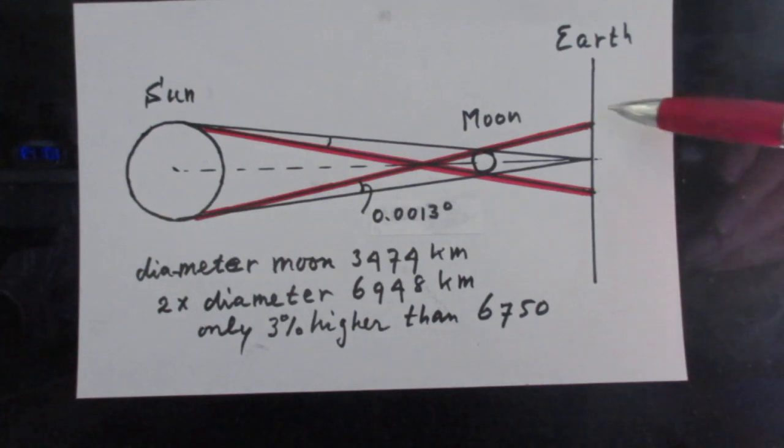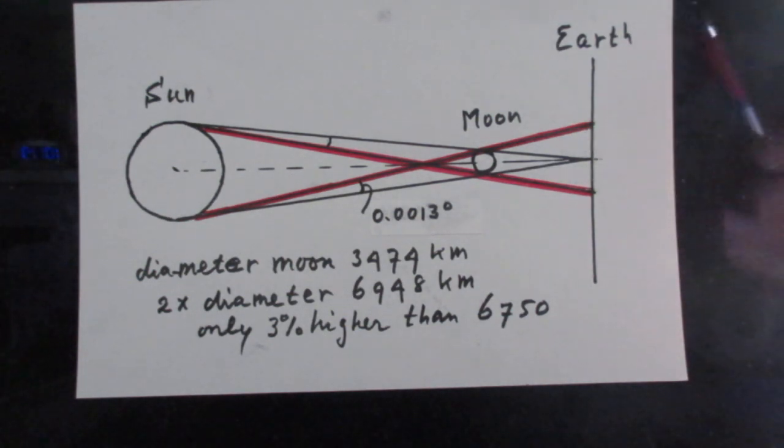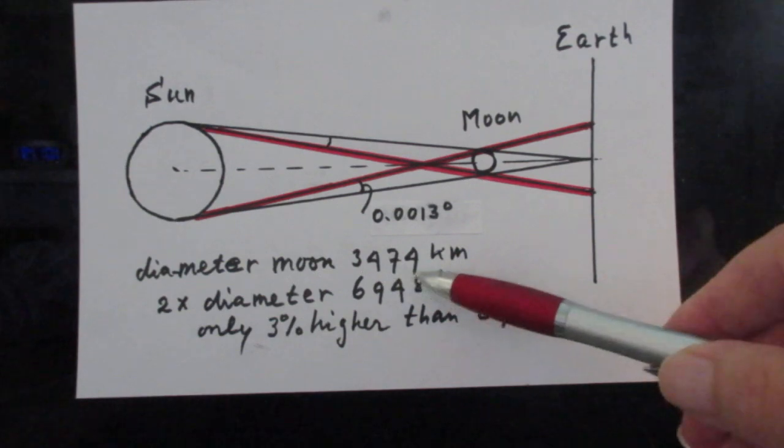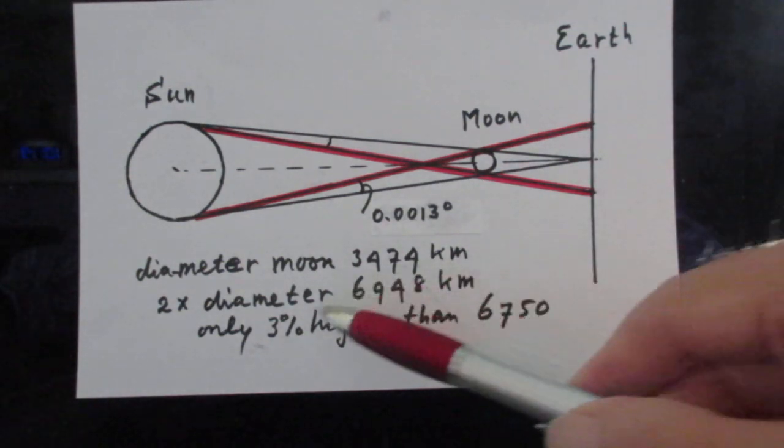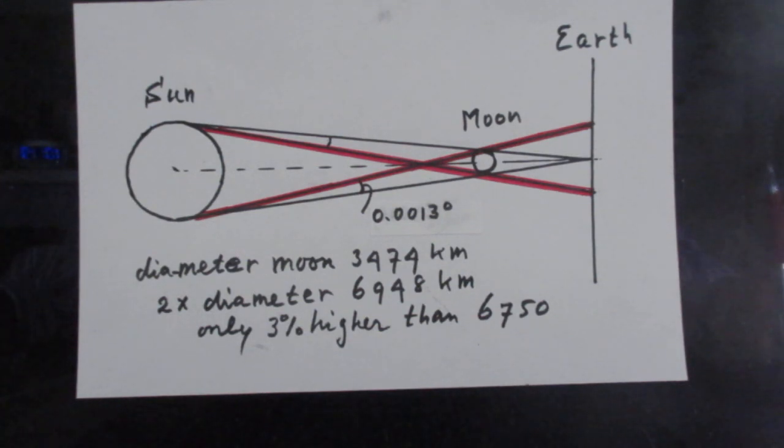So clearly this part, the penumbra as projected onto the Earth must be roughly twice the lunar diameter. And twice the lunar diameter is about 6,948 kilometers. That's only 3% higher than the correct value. I thought you would enjoy that.